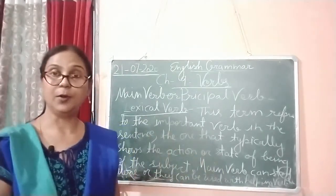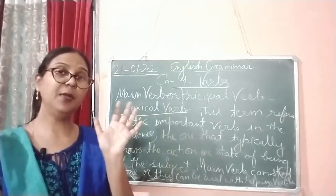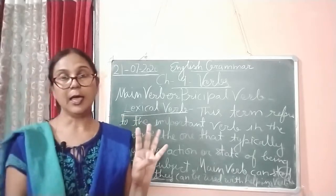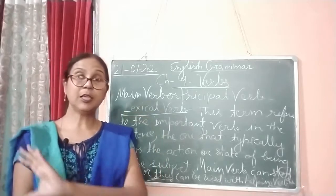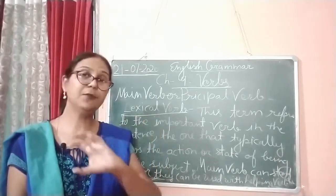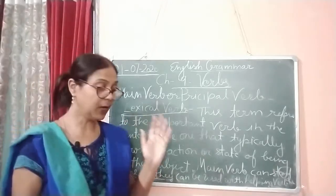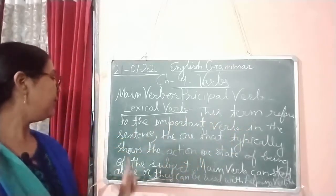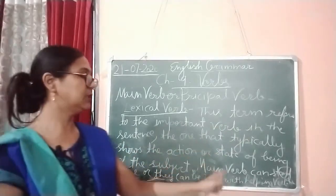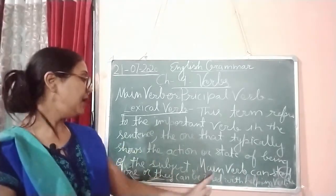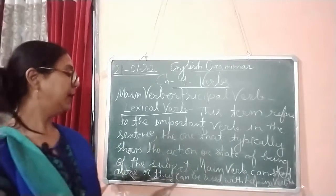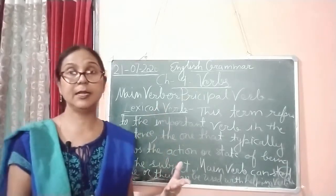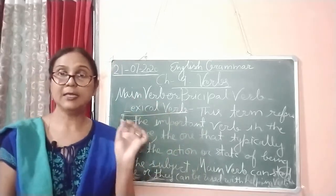So these are called main verb or principal verb. How can we recognize the main verb of a sentence? Words like read, write, run, drink, and eat — these are all main verbs, because they can give the full meaning of any sentence. This term refers to the important verb in the sentence, the one that typically shows the action or state of being of the subject. Main verb can stand alone or be used with helping verbs — this we have to learn, because whenever the question is asked, we can recognize the main verb.